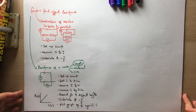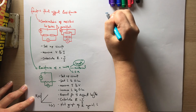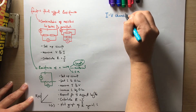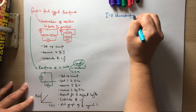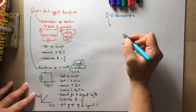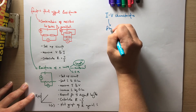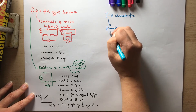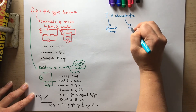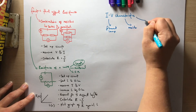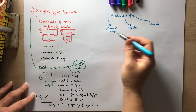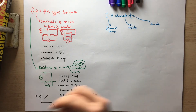The other required practical related to electricity is IV characteristics. You need to know this for three different components: a filament lamp, a resistor, and a diode.